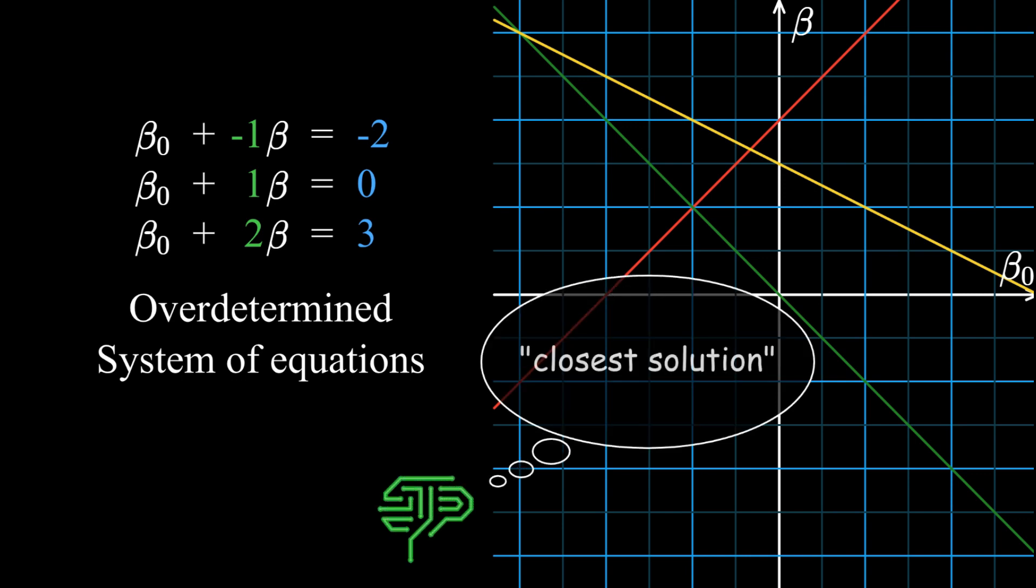However, there is a notion of a closest solution to the system. This closest solution is the vector beta naught hat, beta hat, which are the coefficients for the regression line that I discussed last time.